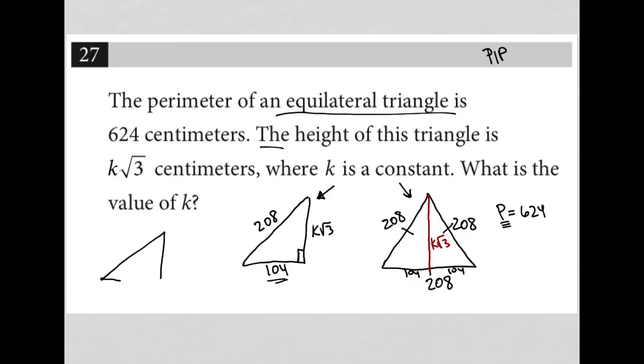Maybe this will jog our memory. We actually are told on the test on the first page where we have information regarding formulas that if we have a leg that is x and the hypotenuse is 2x, then the long leg is x root 3.